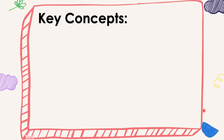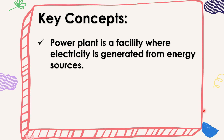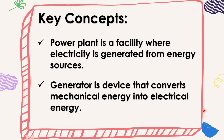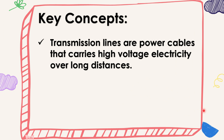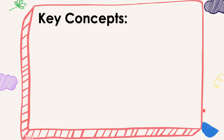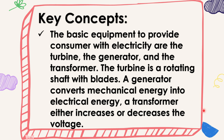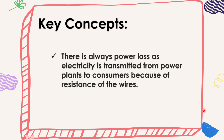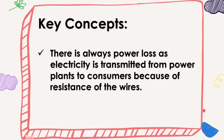Let us summarize our lesson. A power plant is a facility where electricity is generated from energy sources. A generator is a device that converts mechanical energy into electrical energy. Transmission lines are power cables that carry high-voltage electricity over long distances. Distribution lines carry electricity at lower voltage and distribute power to end consumers. The basic equipment to provide consumers with electricity are the turbine, the generator, and the transformer. The turbine is a rotating shaft with blades. A transformer either increases or decreases the voltage. There is always power loss as electricity is transmitted from power plants to consumers because of resistance in the wires.